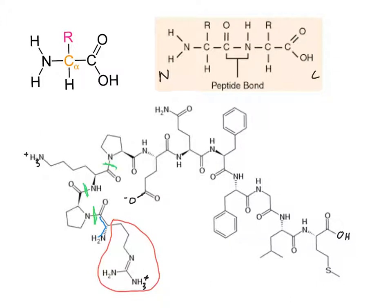Continuing along the chain, we have amine, alpha carbon, carbonyl, and peptide bond repeated for each subsequent residue. At each step, we confirm the backbone direction by checking that the carbonyl follows the alpha carbon. We can verify which direction the backbone goes because any branch not leading to a carbonyl is part of the side chain. Working through the chain: amine, alpha carbon, carbonyl, peptide bond — this pattern repeats for each amino acid residue all the way across the polypeptide.